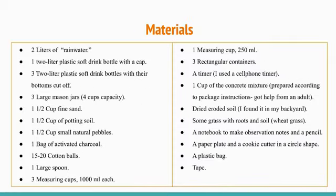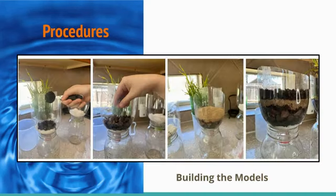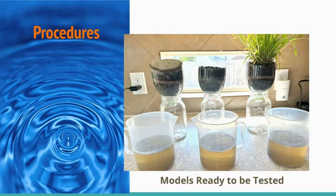This is a list of materials I used to build the models. These pictures show the materials used, including the rainwater, and the process of building the models, including the layering process. This picture shows the models ready to be tested.